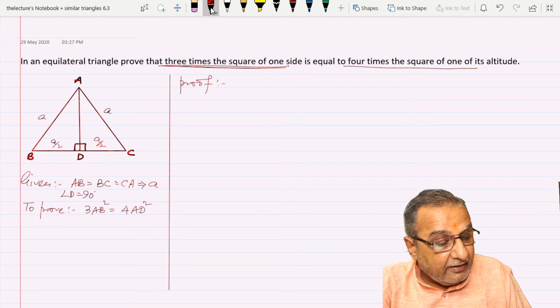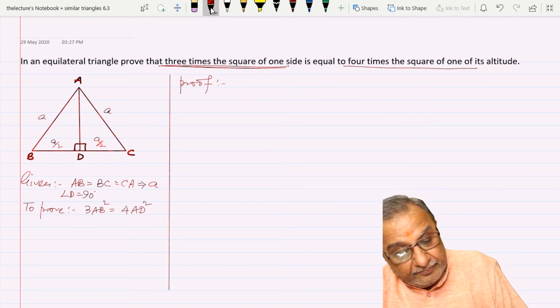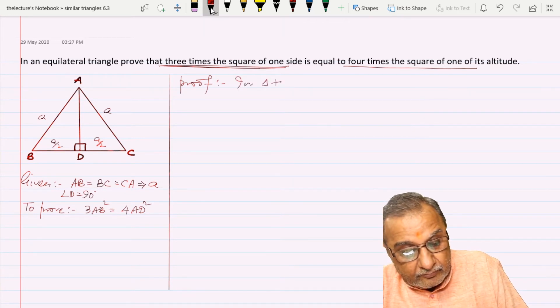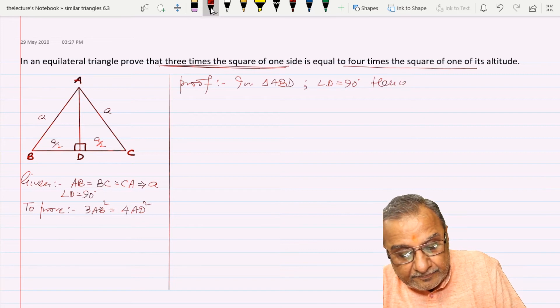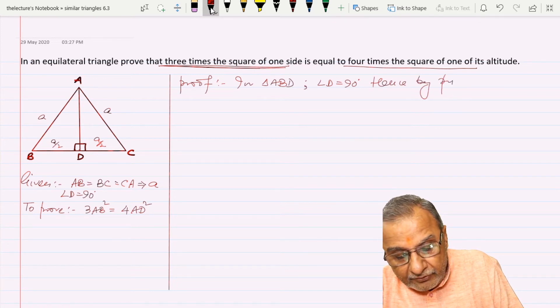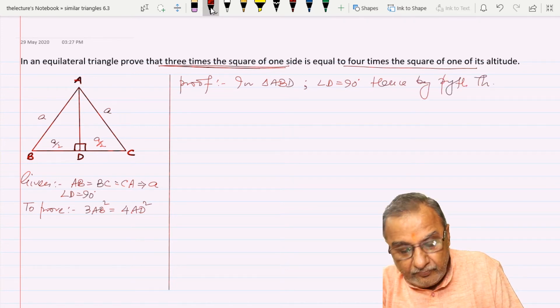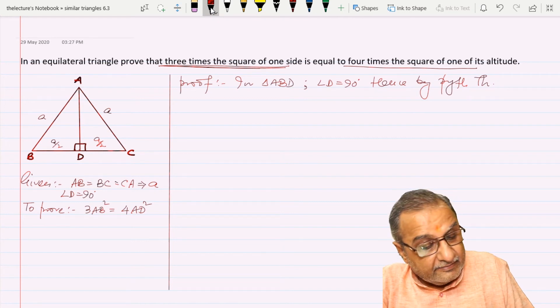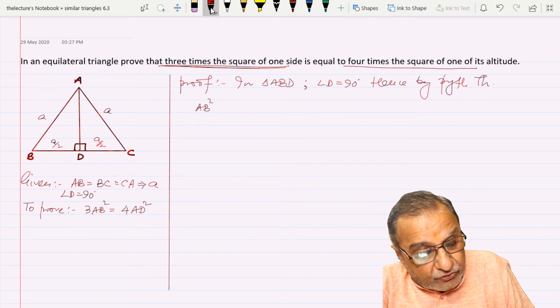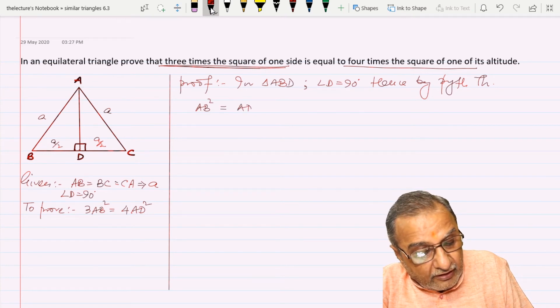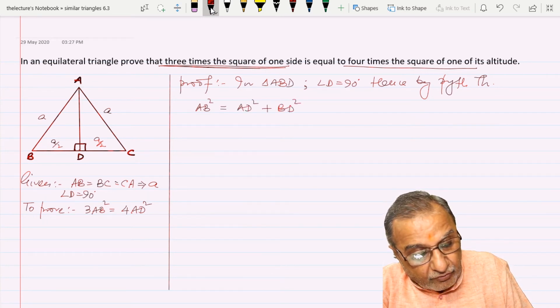In triangle ABD, angle D is 90 degrees. Hence by Pythagoras theorem, AB squared equals AD squared plus BD squared.